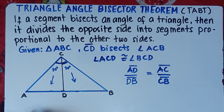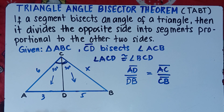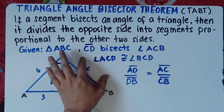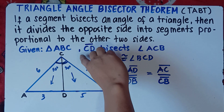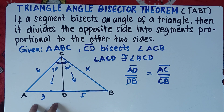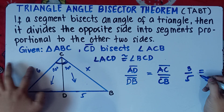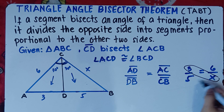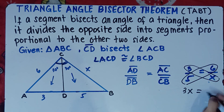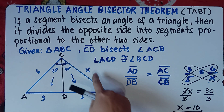Let's give an example. If AD is 3, DB is 5, and AC is 6, find X (which is CB). So: 3 over 5 equals 6 over X. Cross multiply: 3 times X equals 5 times 6, so 3X equals 30. Divide both sides by 3, and X equals 10.